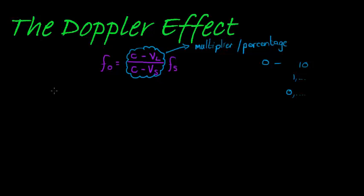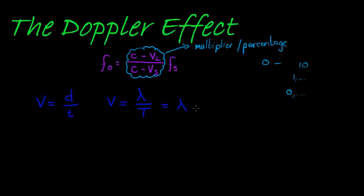Now, how do we get to this formula? That is what this video is about. First, we just need to know a few things. First is the formula that velocity equals distance over time. We also know that the velocity of a wave equals the wavelength divided by the period — the period being the time between two crests. This formula can also be expressed as lambda times the frequency, because T equals one over F.